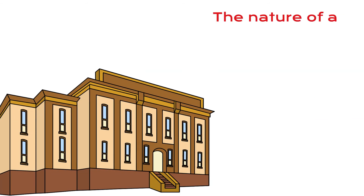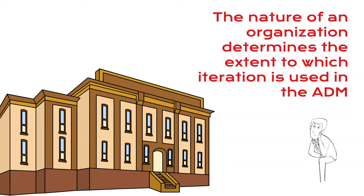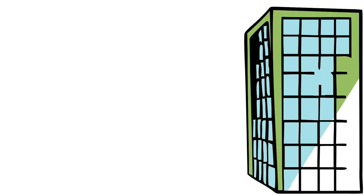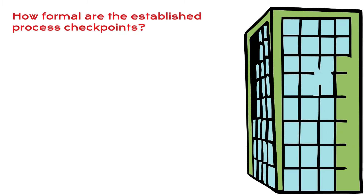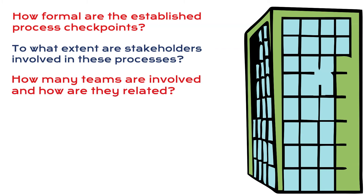The nature of an organization determines the extent to which iteration is used in the ADM. How formal are the established process checkpoints? To what extent are stakeholders involved in the process? The more formality we have in the checkpoint, the more likely we need to formally iterate. The more stakeholders and teams we have, the more likely we need to iterate.